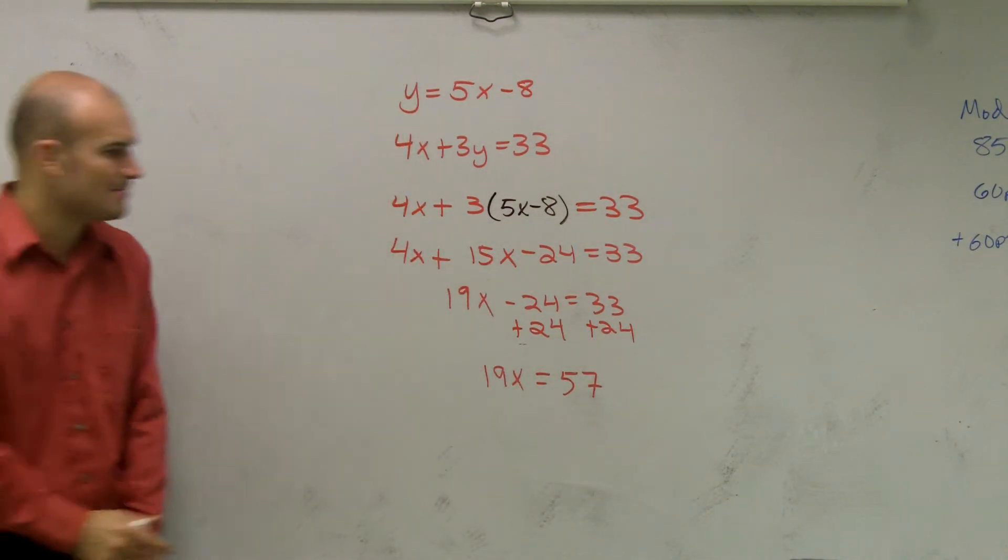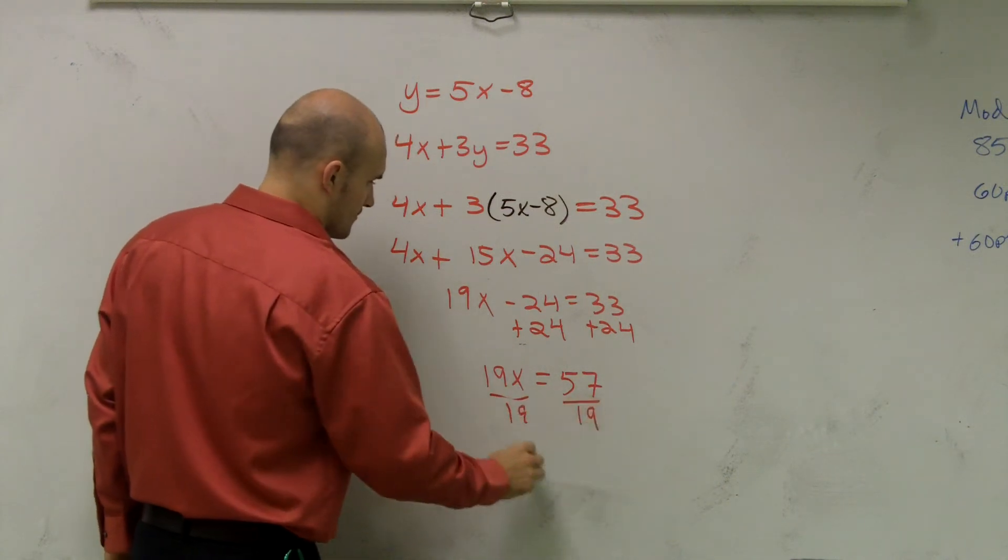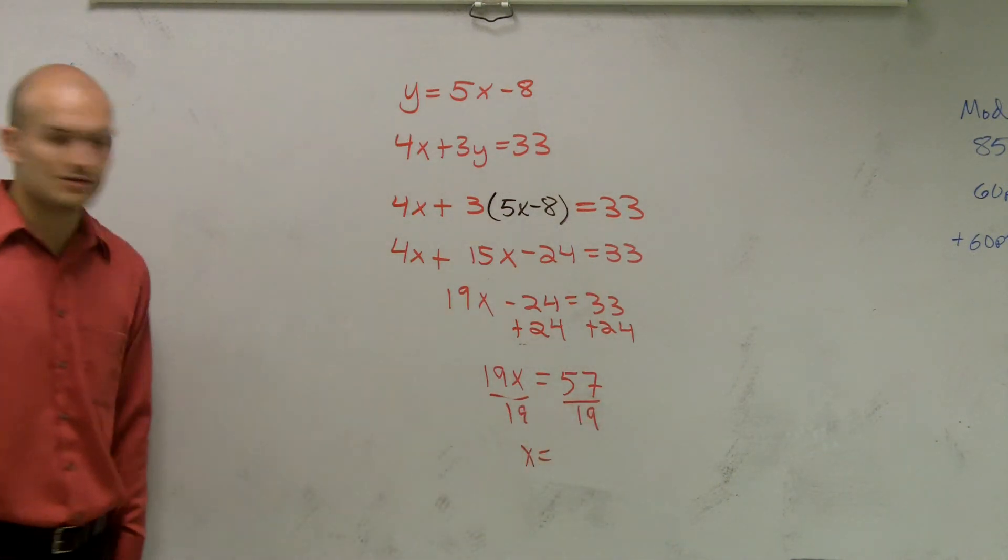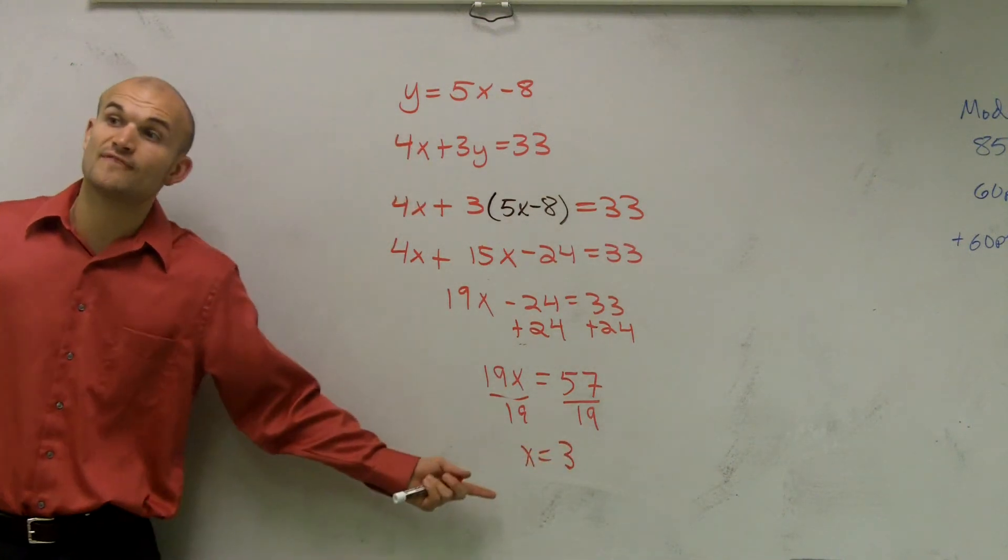So I get 19x equals 57. And then now I need to divide by 19. And x is going to equal 3.